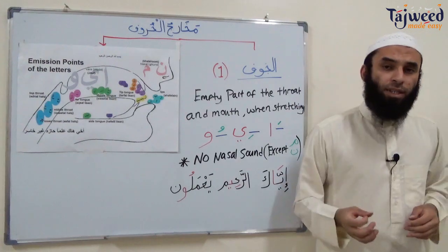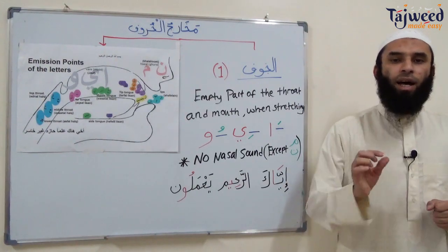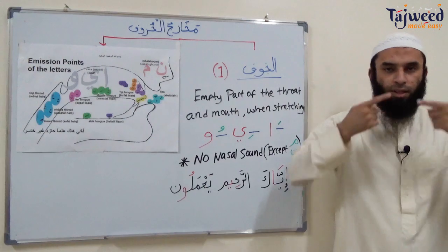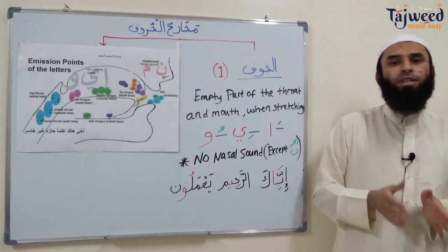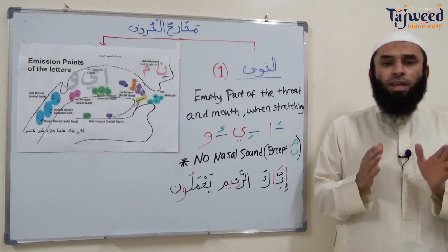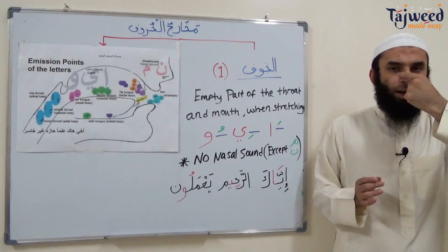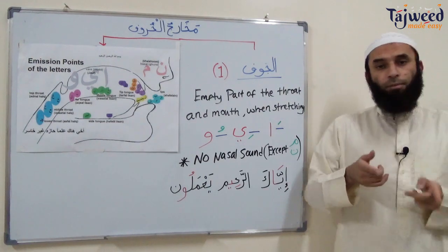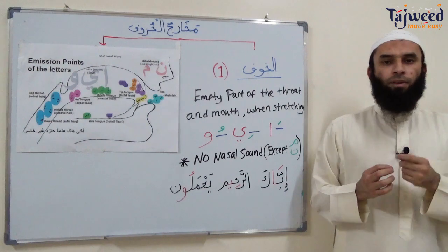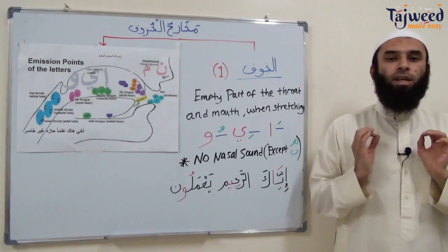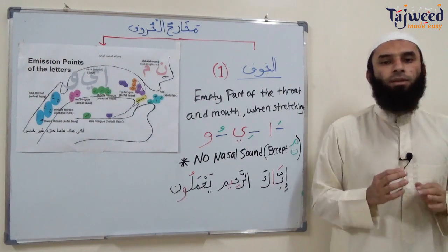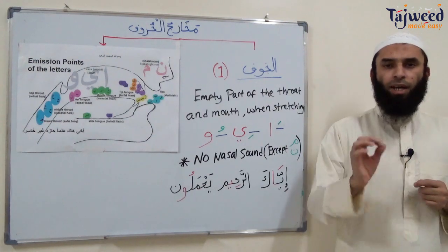How do we fix this problem? We practice with فَتْحَة، كَسْرَة، ضَمَّة. Say أَا, then stop. Touch your nose and listen — if you can hear a nasalization sound, you're not doing it properly. If you can't hear it, you're doing it correctly. So: أَا, أَا — no nasalization. If I say أَا with a nasal sound, I need to practice. Similarly, إِي, إِي — check for nasal sound. And أُو, أُو — check for nasal sound.